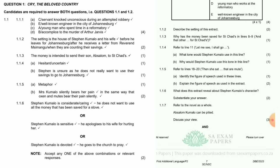Question 1.1.7: Refer to the novel as a whole — Absalom Kumalo can be pitied. Discuss your view. It's your opinion, guys. If you say yes, you can explain that Absalom's unemployment forces him to join Johannesburg, Pafuri and Matthew Kumalo in burglarizing Otter's home. If you say no, you can say Absalom was raised with good values and should have been guided by that.